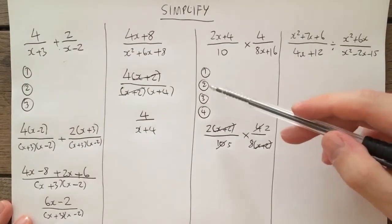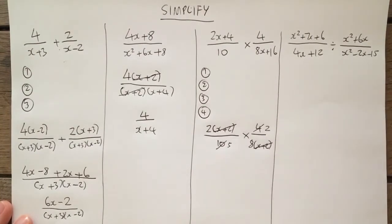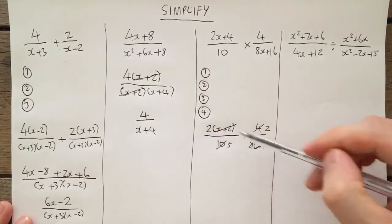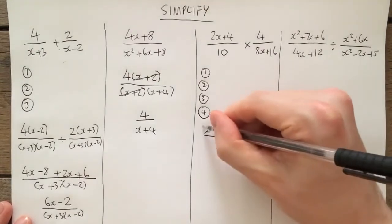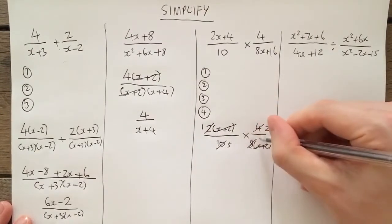It looks like I've cross-simplified as much as I possibly can, but have I? The 2 here and the 8 here, I can actually cross-simplify once more. They've both gone into the 2 times table. So that would become 1 and that would become 4.